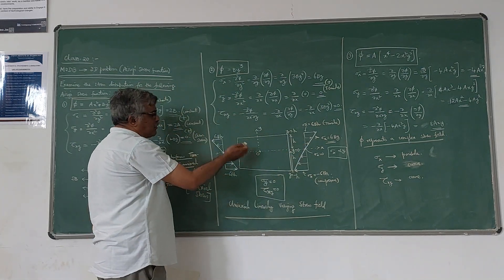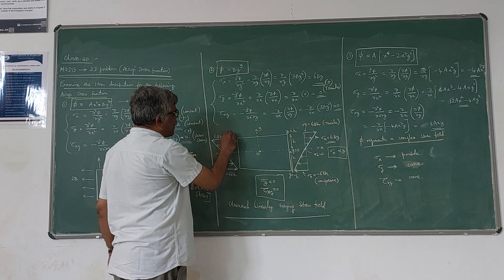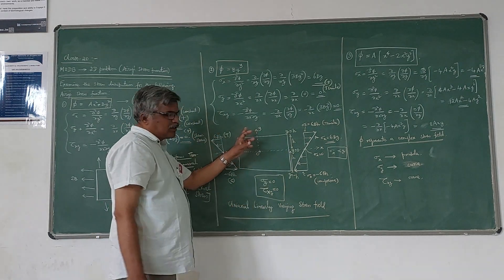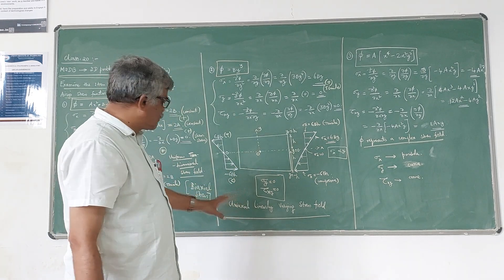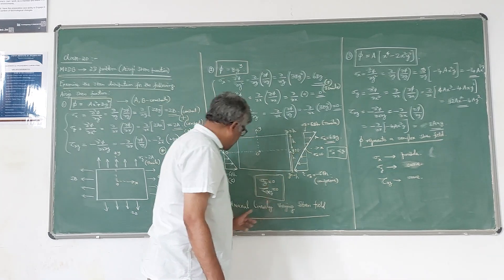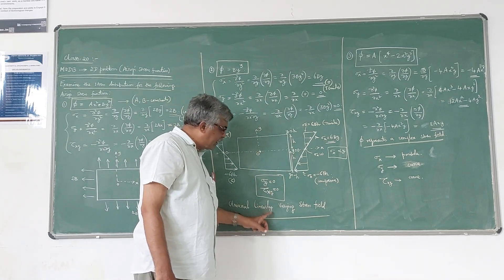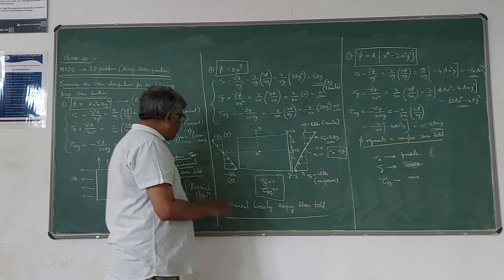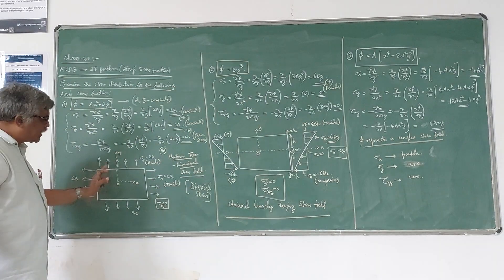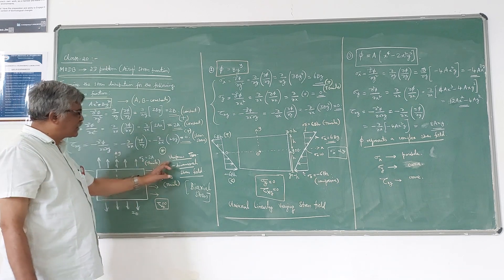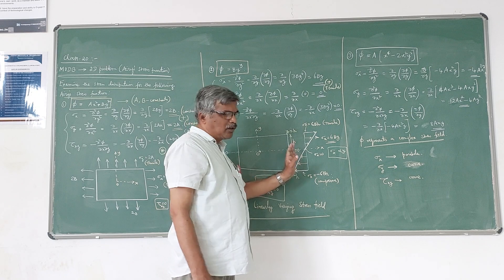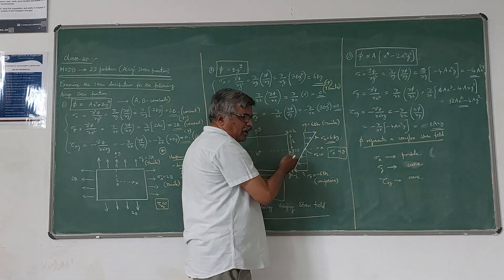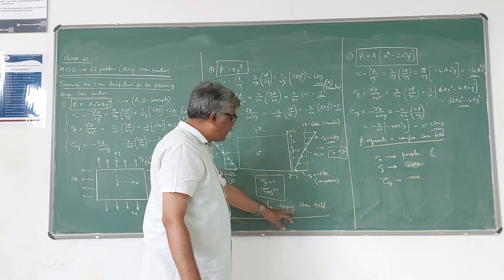On both sides of the element: at y = 0, σx = 0; at the top it is tensile (6bh); at the bottom it is compressive (−6bh). There is no σy and no τxy, both are zero. Since stress acts only in one direction and varies linearly, this is a uniaxial, linearly varying stress field.